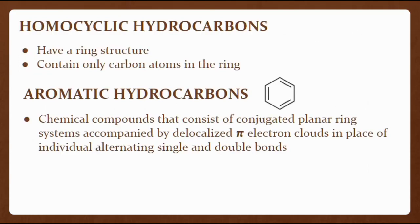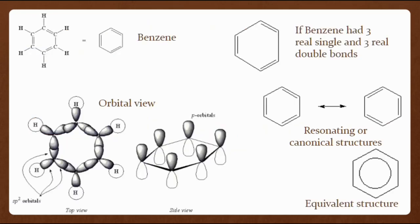Homocyclic hydrocarbons have a ring structure and contain only carbon atoms in the ring. Aromatic hydrocarbons are chemical compounds that consist of conjugated planar ring systems accompanied by delocalized pi electrons in place of individual alternating single and double bonds. Aromatic rings, also known as aromatic compounds or arenes, are hydrocarbons which contain benzene or some other related ring structure. Benzene C₆H₆ is often drawn as a ring of six carbon atoms with alternating double bonds. All of the bond lengths in the benzene ring are 1.397 angstroms, roughly intermediate between typical single bond lengths of approximately 1.5 angstroms and double bonds of approximately 1.3 angstroms. All of the carbon atoms in the benzene ring are sp² hybridized.